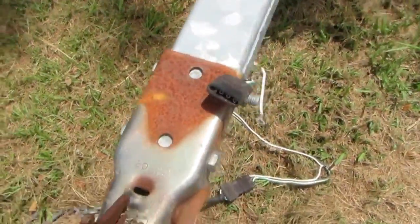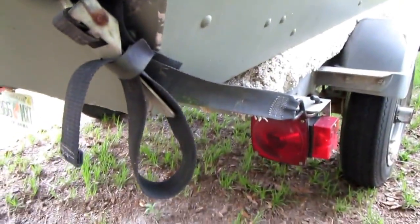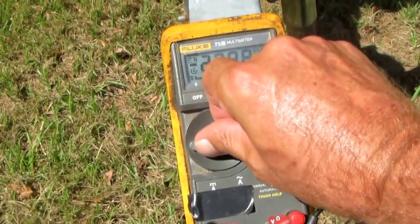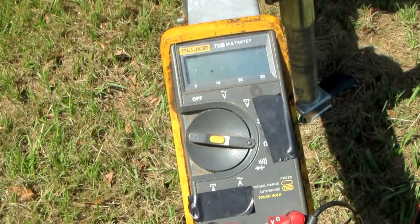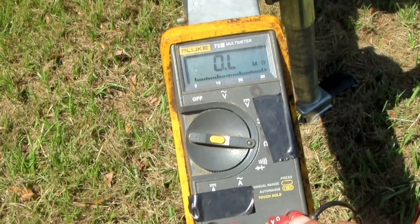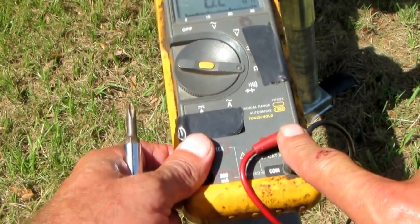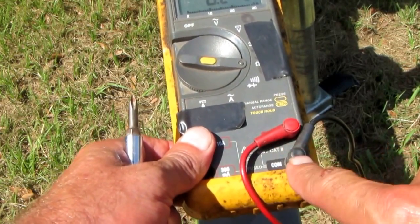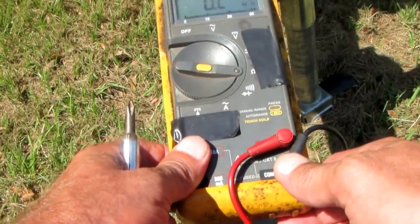I'm going to troubleshoot these trailer lights on this typical boat trailer. You can see I've got a typical three-pin connector, typical trailer lighting system. Pretty simple to do. Take my multimeter, put it in the ohms position. Make sure my red wire is in the volt